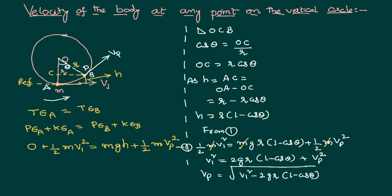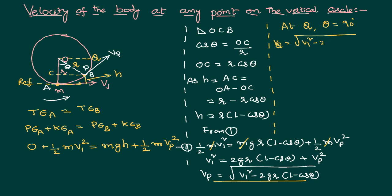Suppose the particle reaches the horizontal position at point Q. At point Q, the angle theta with the vertical equals 90 degrees. Substituting into the derived formula, velocity at Q equals the square root of V1 squared minus 2GR times (1 minus cos 90). Since cos 90 equals zero, velocity at Q equals the square root of V1 squared minus 2GR.